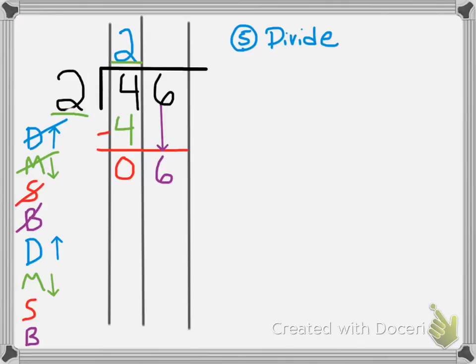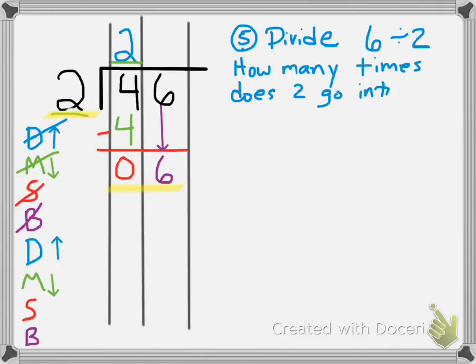Divide again. Now we're looking at how many times does 2, the divisor, go into 6? The number we just wrote. This is the step that kiddos always get messed up on. They say, what am I dividing? You're dividing that 6 we just wrote down. So, 2 goes into 6 3 times, and when we divide, our answer goes up, and I cross out my D in my DMSB's.